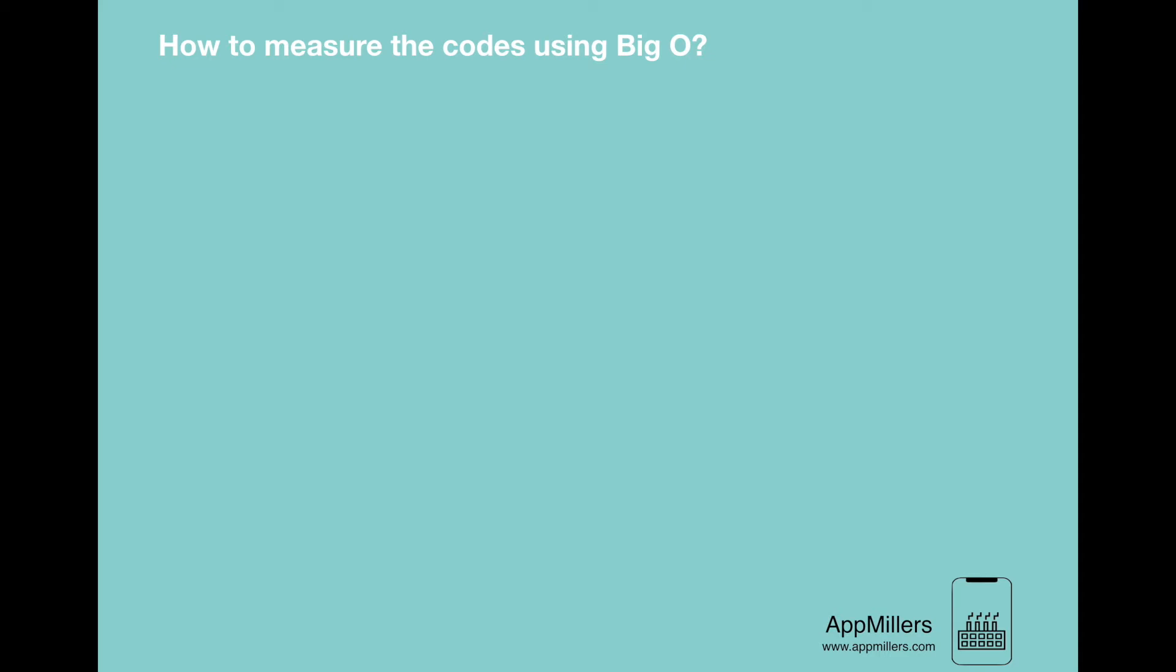Alright, till this lecture in this section, we have learned different features and types of Big O. Now in this lecture, we will look at how to measure the time complexity of codes using Big O.